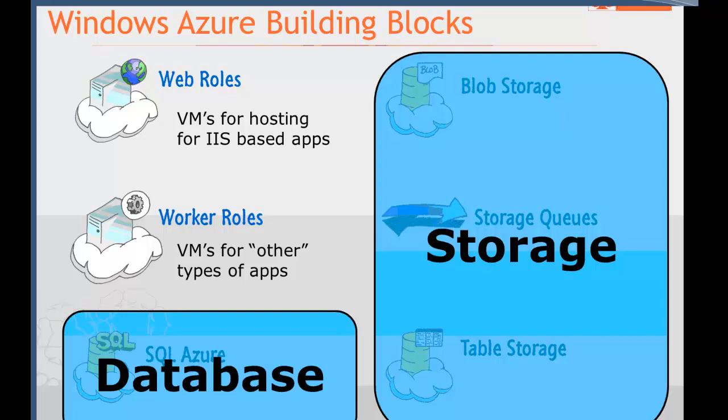What's important about these two things, and something that really differentiates them from the world most of us are operating in, is that these roles or VMs are stateless — meaning that if something goes wrong and one has to be restarted, it reverts back to its original state. You have to remember, we're trying to build systems that scale out near infinitely, and trying to persist state information on all those machines can become a really high burden.